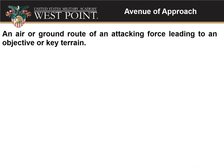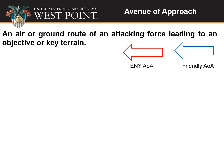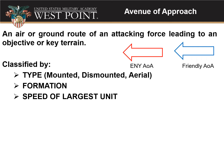An avenue of approach is an air or ground route of an attacking force leading to the objective or key terrain. If it's not leading to an objective or key terrain, it is not an avenue of approach. We use red symbols for enemy and blue for friendly. We classify avenues of approach by type — mounted, dismounted, or air — the formations that can get through them, and the speed of movement, whether on a paved road versus hilly terrain or swamp.